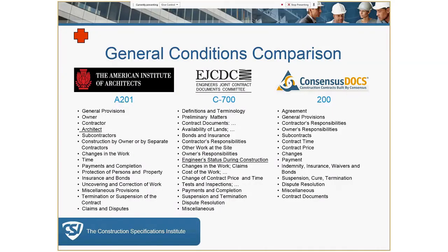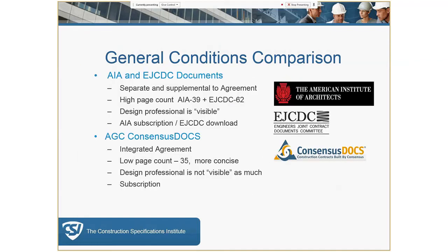Something important to note: the red plus sign on slides indicates information that might be on the exam. A double plus sign means it's definitely going to be covered on the exam. Here's a basic comparison of the three most popular families of contract forms. You can see the AIA and the EJCDC documents are similar, and there are some things about the consensus docs that are different.